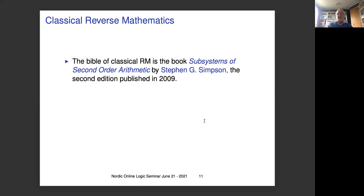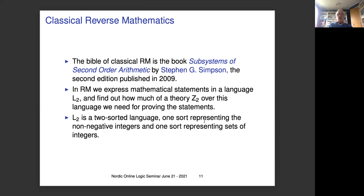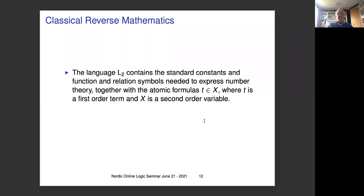The Bible for anyone who wants to do reverse mathematics more systematically is the book by Stephen Simpson, Subsystems of Second Order Arithmetic; the second edition was published in 2009 and is available on the net. In reverse mathematics, we express mathematical statements in the language L₂, and we find out how much of a theory — set 2 over this language — we need for proving these statements. L₂ is a two-sorted language: one sort representing the non-negative integers, and one sort representing sets of integers. The language L₂ contains standard constants and functions needed for number theory, together with the atomic formula 't is an element of X', where X is a second-order variable and t is a standard first-order term.